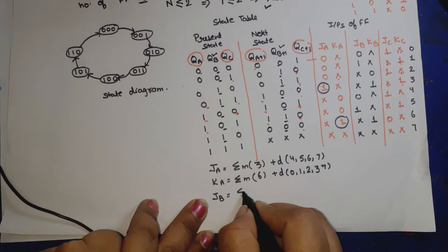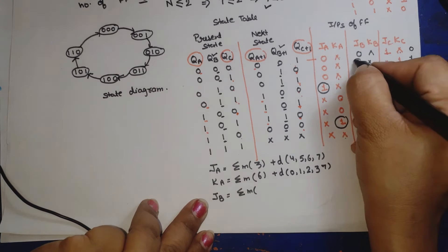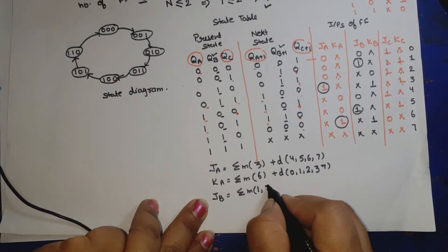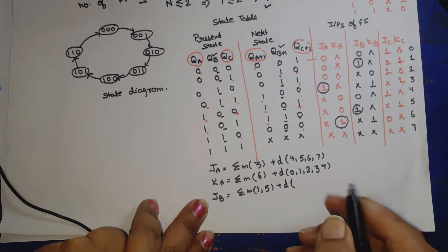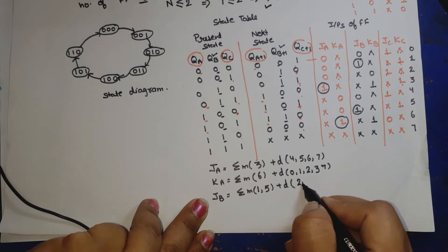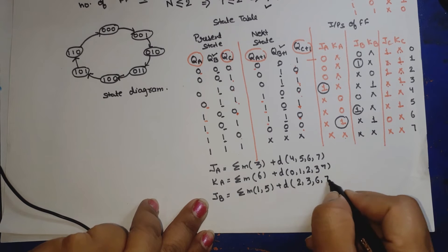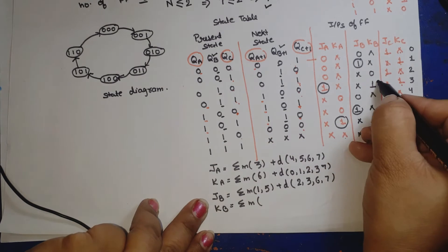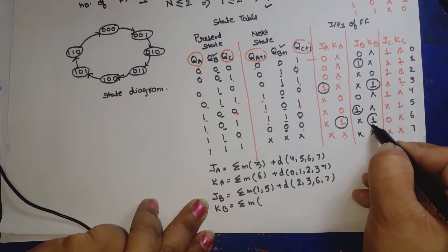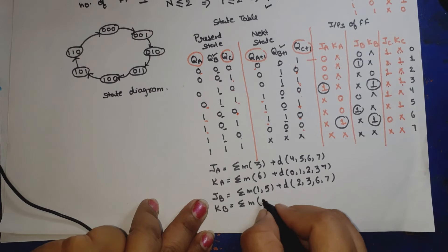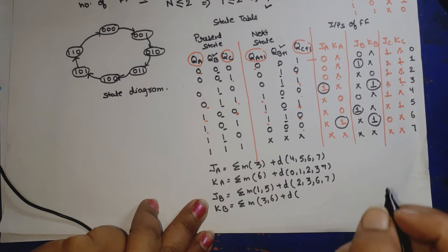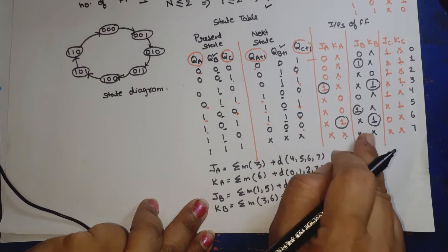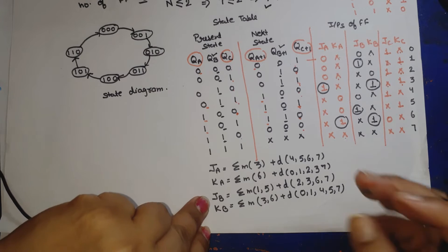JB equals summation of minterms at 1 and 5, plus don't cares at 2, 3, 6, and 7. KB equals summation of minterms at 3 and 6, plus don't cares at 0, 1, 4, 5, and 7.